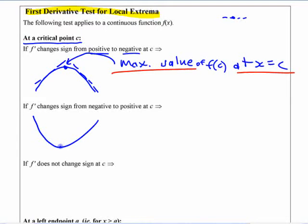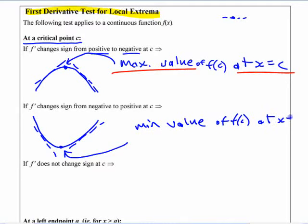Similarly, the same thing the other way here. If you're going from negative to positive, then this has to be a minimum.